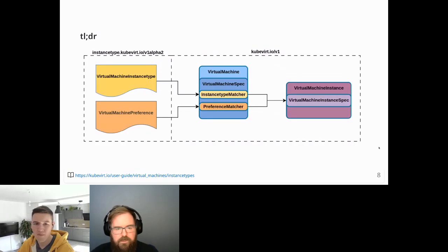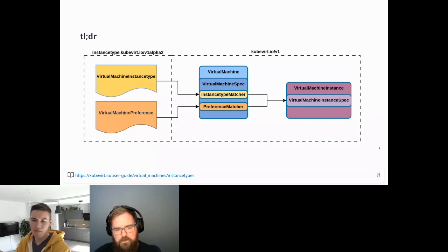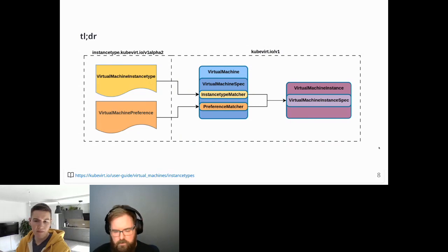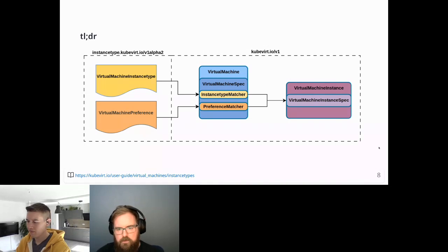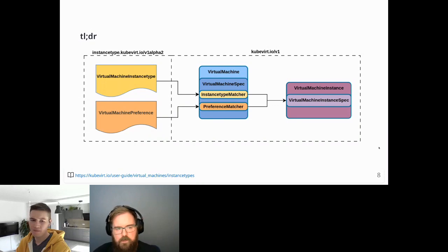To illustrate this with a diagram: on the left-hand side you'll see the two new families of CRDs. They map through to the virtual machine and are expanded into the virtual machine instance on the right at runtime. This diagram should give you an overview of what we're trying to accomplish here.